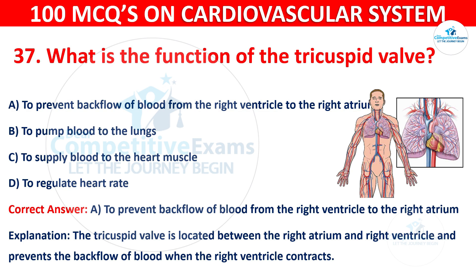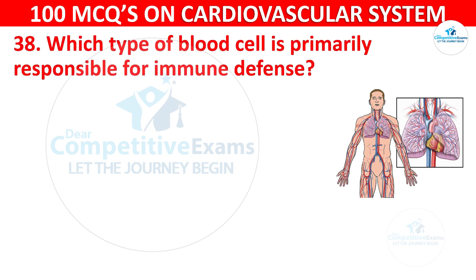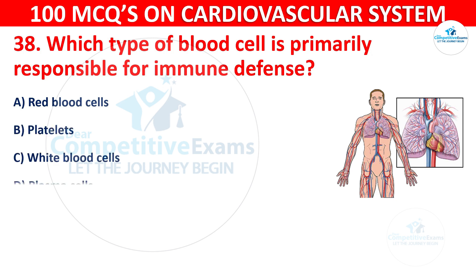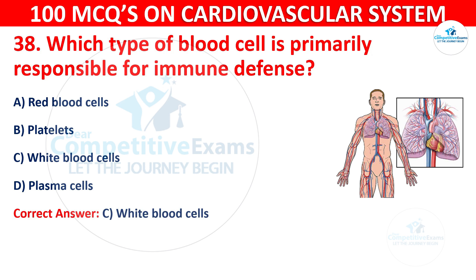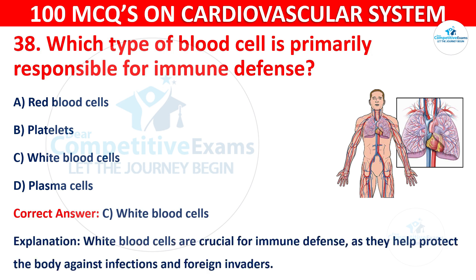Question 38: Which type of blood cell is primarily responsible for immune defense? Options are: Red blood cells, Platelets, White blood cells, or Plasma cells. The correct answer is C, White blood cells. White blood cells are crucial for immune defense, as they help protect the body against infection and foreign invaders.